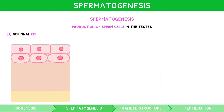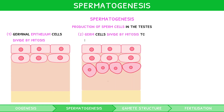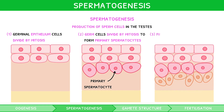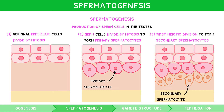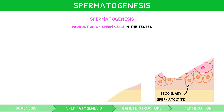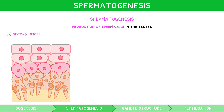The germinal epithelium is the origin of sperm production, where cells divide by mitosis to produce diploid cells. Diploid cells then grow by mitosis to become primary spermatocytes. Primary spermatocytes then undergo the first meiotic division to produce two secondary spermatocytes. Secondary spermatocytes then undergo the second meiotic division to produce two immature sperm, named spermatids.